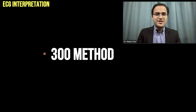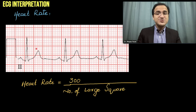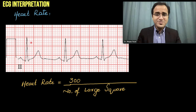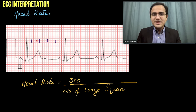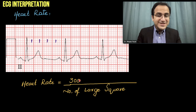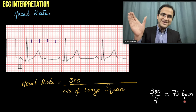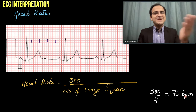The second method of rate calculation is the 300 method. Between the QRS complexes, count the number of large squares and divide 300 by that number. Using a calculator: the large boxes between these two QRS complexes total approximately four. 300 divided by 4 equals 75 beats per minute — the same result as the square counting method.